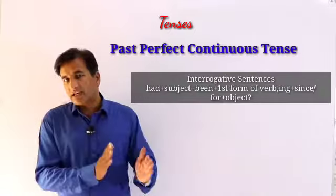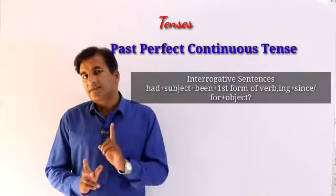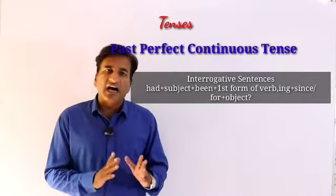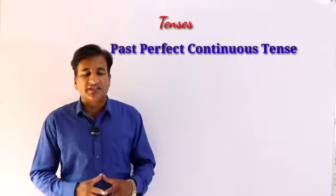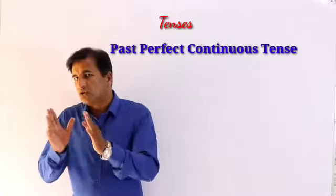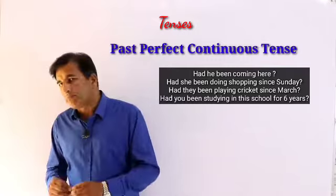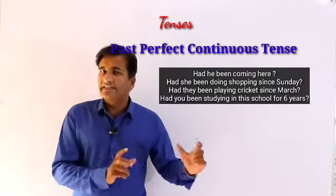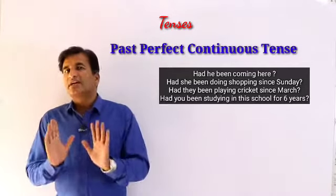اب ہم دیکھتے ہیں interrogative sentences — سوالیہ جملے۔ ان میں جملے کے شروع میں 'Had' آئے گا، پھر subject، پھر 'been'، پھر first form of verb with -ing، پھر object اور آخر میں sign of interrogation۔ 'Had he been coming here?' — کیا وہ یہاں آتا رہا تھا؟ 'Had she been doing shopping since Sunday?' — کیا وہ اتوار سے shopping کر رہی تھی؟ Sunday ایک fixed point of time ہے اس لیے 'since' آئے گا۔